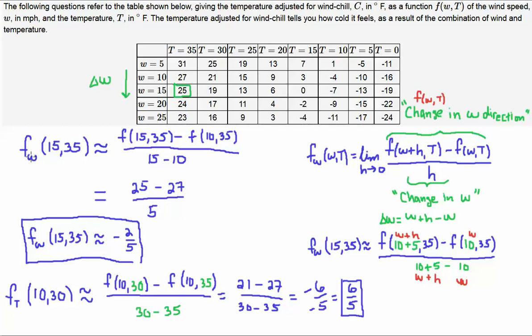So, that means when we're taking changes with respect to w, we're only going in the vertical directions. If you're taking changes with respect to t, we'd be going in the horizontal directions. Good luck.